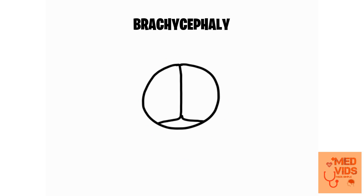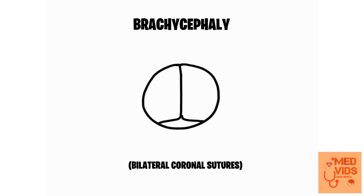Then we have brachycephaly, which is because of early fusion of the coronal sutures on both sides. Because of this bilateral early fusion, the skull will not be able to elongate in the anterior-posterior direction properly, leading to a short skull known as brachycephaly.